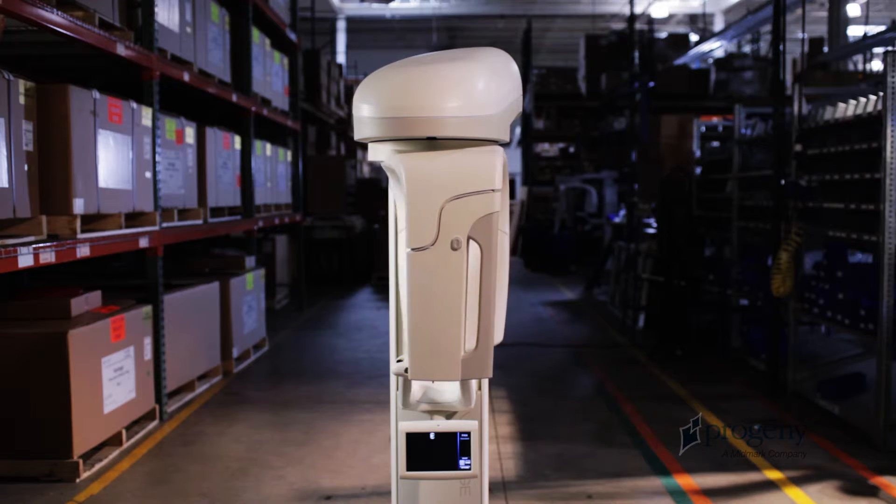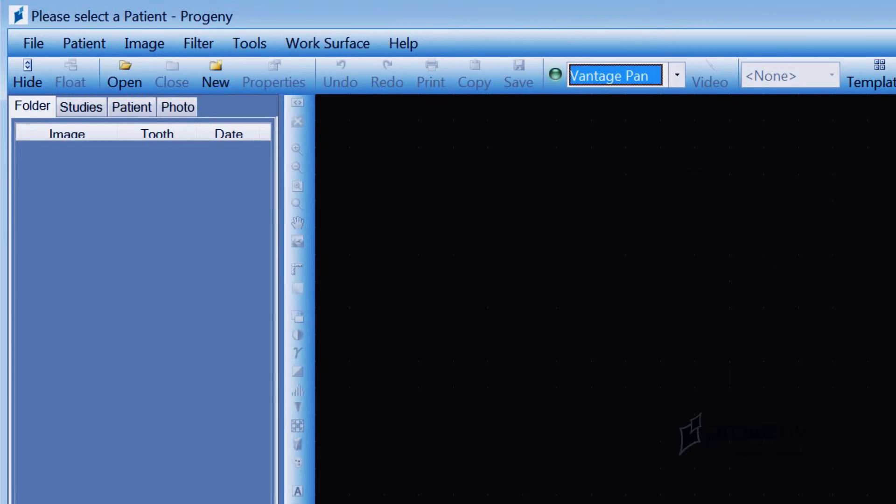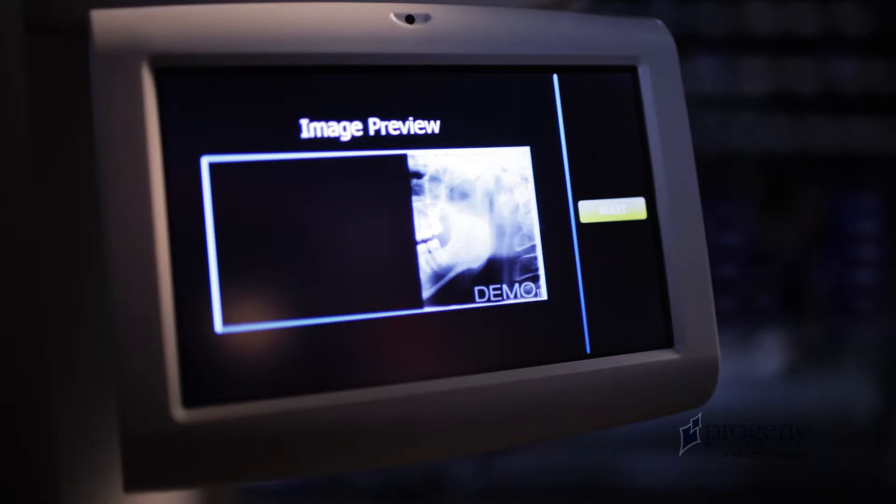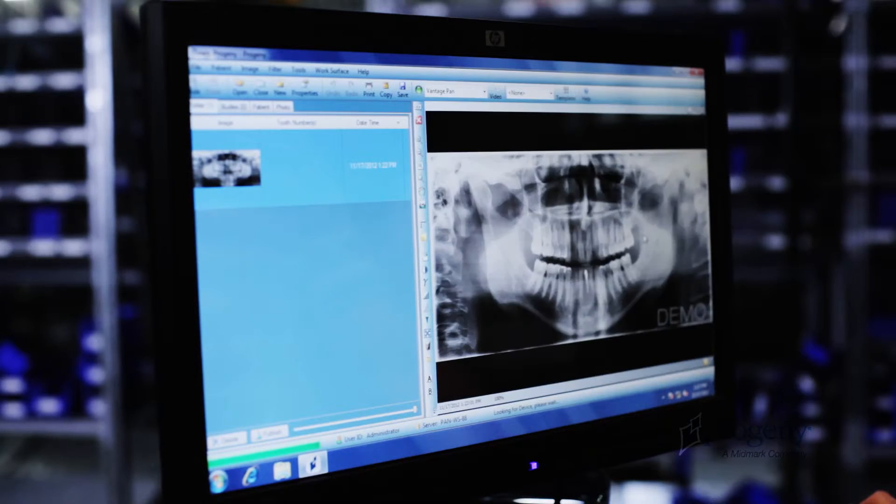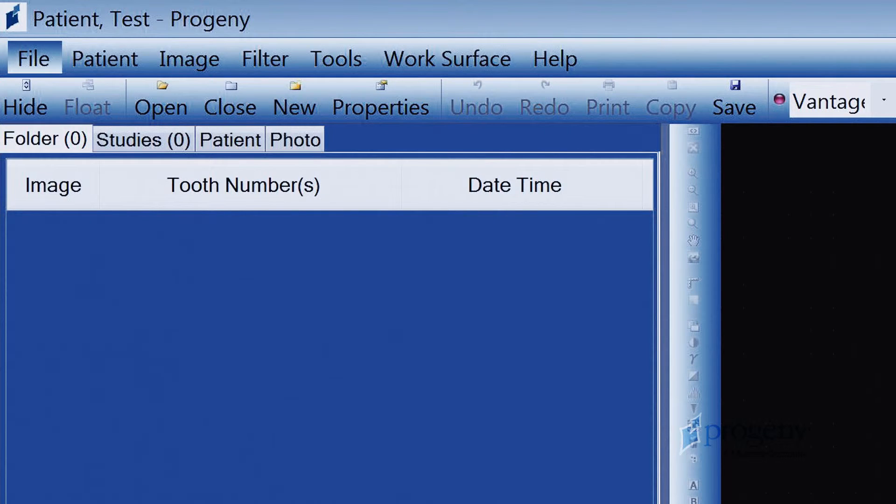Allow the vantage system to synchronize with the workstation. The light for Vantage Pan should now turn green. At this point, all images taken with the Vantage Panoramic will be delivered to the client.